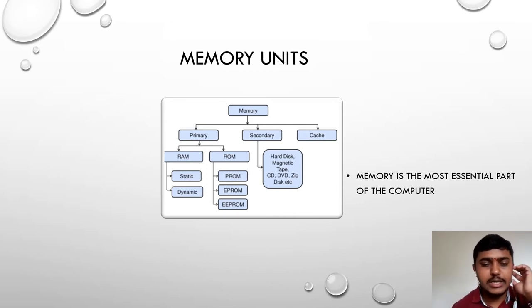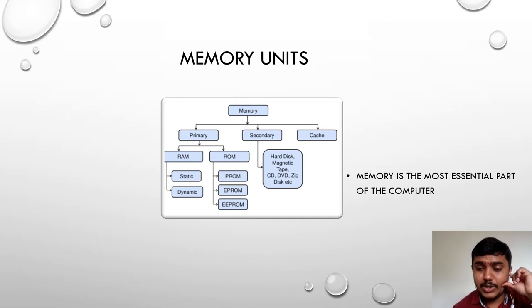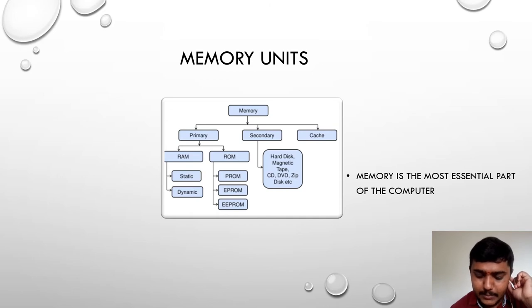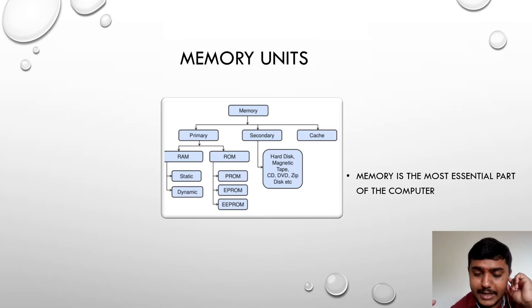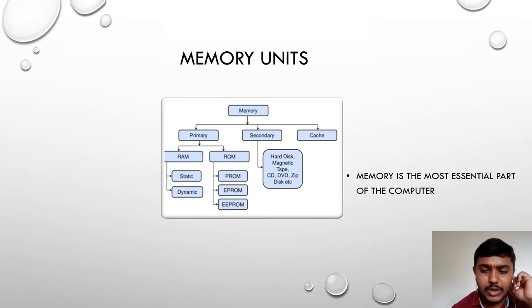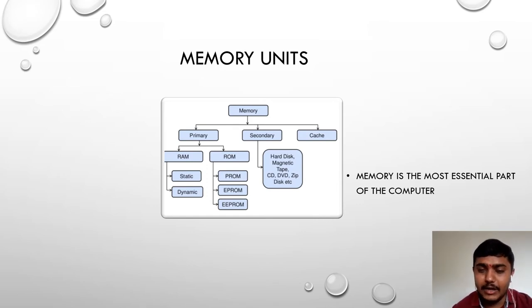RAM means Random Access Memory. When you boot up a system with Windows 10 or Windows 7, the operating system will be present in the RAM, and it runs from the RAM to help you work on your system. ROM is Read Only Memory — it is installed when the system is manufactured and is permanent. You cannot erase the data in ROM.